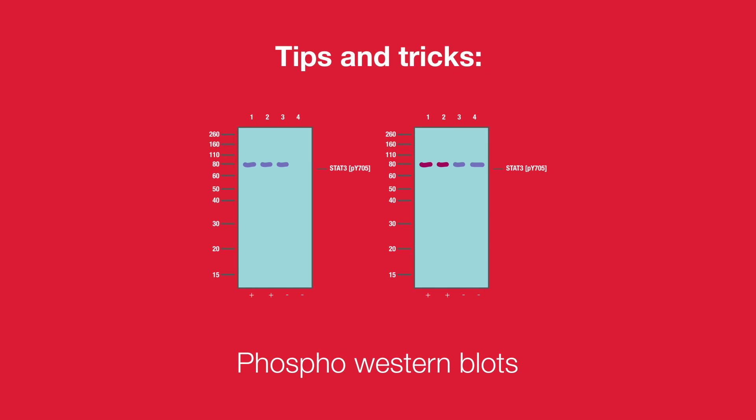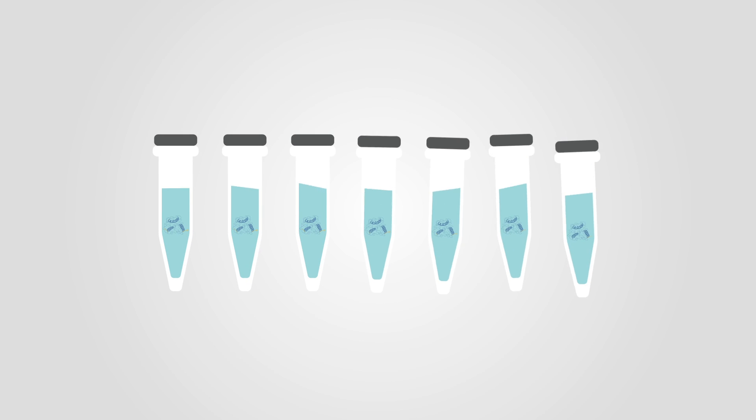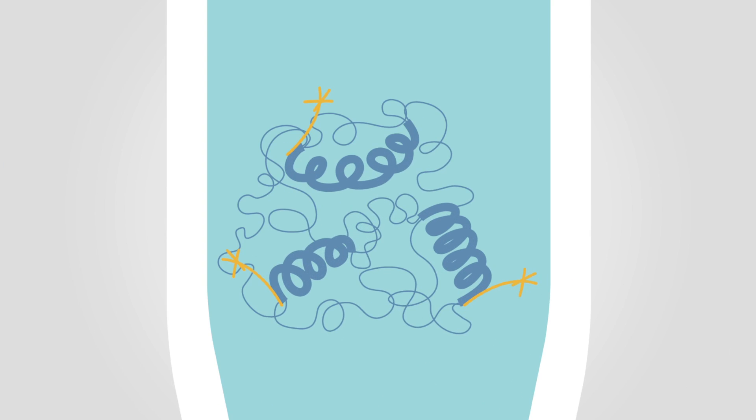Detecting phosphorylated proteins on a Western blot is very similar to running a regular Western blot. The basic technique is the same: SDS page, transfer, and detection. However, there are a few tips and tricks to consider when detecting phosphorylated proteins.